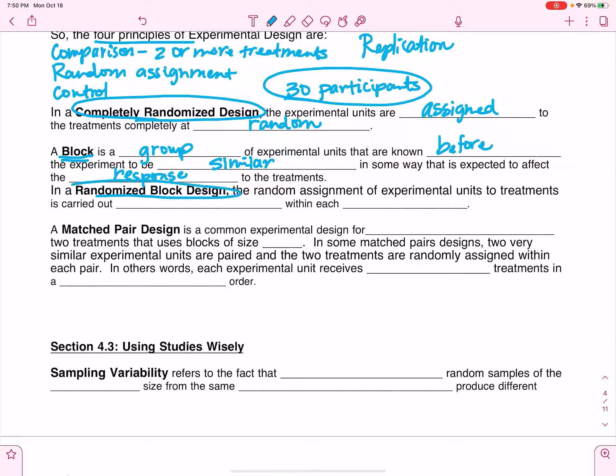A randomized block design means that my random assignment of experimental units to treatments is carried out separately within each block. I create my blocks and then within each block, I do my random selection.